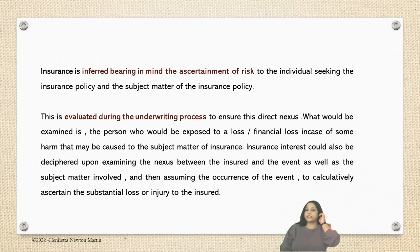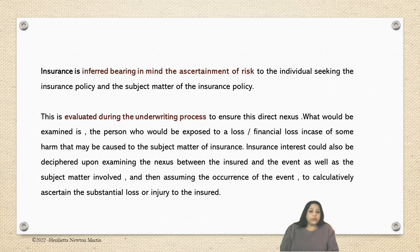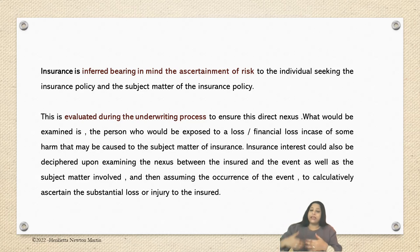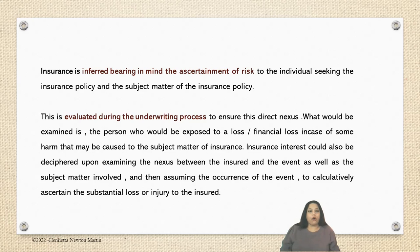This is evaluated during the underwriting process to ensure the direct nexus or relationship. What would be examined is whether the person would be exposed to financial loss in case of some harm caused to the subject matter of insurance. Insurable interest may also be deciphered by examining the nexus between the insured and the event, as well as the subject matter involved, and then assuming the occurrence of the event to asserting the substantial loss or injury that may be caused to the insured.